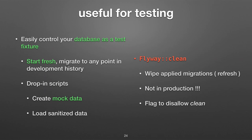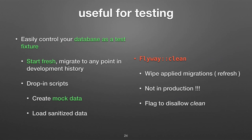Flyway is really useful for testing. You can drop in additional scripts — it's just a folder with files. On the testing machine you can drop in more scripts that create a bunch of fake data used only on that testing machine. On the production side you would not have those scripts in the folder. For loading sanitized data — if you have sensitive data like medical stuff with HIPAA privacy rules, you scramble the data. That's the kind of stuff you might want to drop in as additional scripts, or call Java classes if you do Java work.